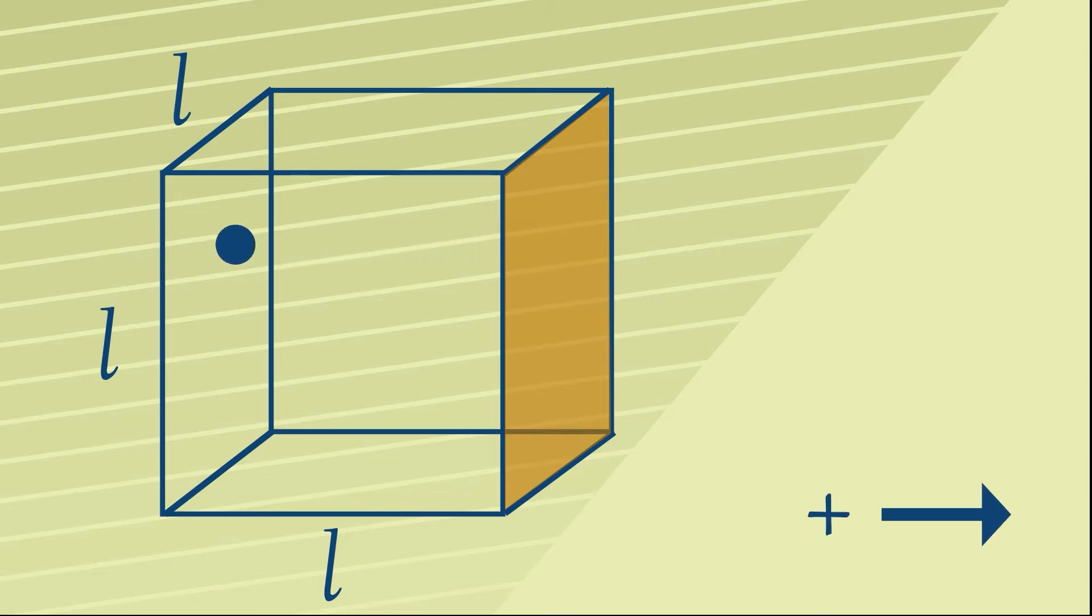What we're going to do is take one of those particles and allow it to only move in the x direction at a constant speed and consider its momentum changes as it travels.